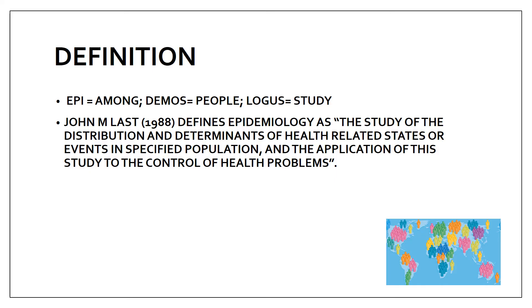John Last in 1988 defined epidemiology as the study of the distribution and determinants of the health-related states or events in a specified population. So you're studying how a disease is distributed and what factors are causing that disease in a specific population. After doing the study, you apply it to control the further health problems. That is the full definition: study of distribution and determinants of health-related states in a specified population and the application of this study to control health problems.